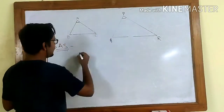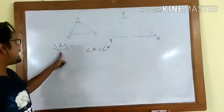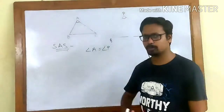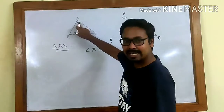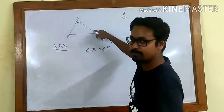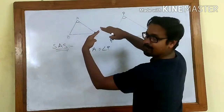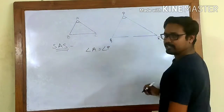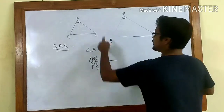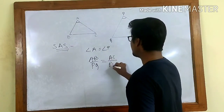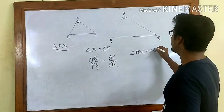Suppose angle A is equal to angle P. For SAS to be satisfied, we must have the sides containing these two angles in proportion. The two sides which contain angle A are AB and AC, because AB and AC are making angle A. Similarly, PQ and PR are making angle P. So, we must have AB to PQ equal to AC to PR. Under these two conditions, triangle ABC is similar to triangle PQR.